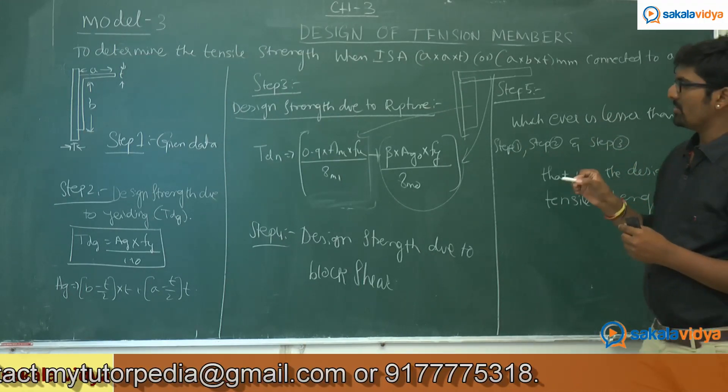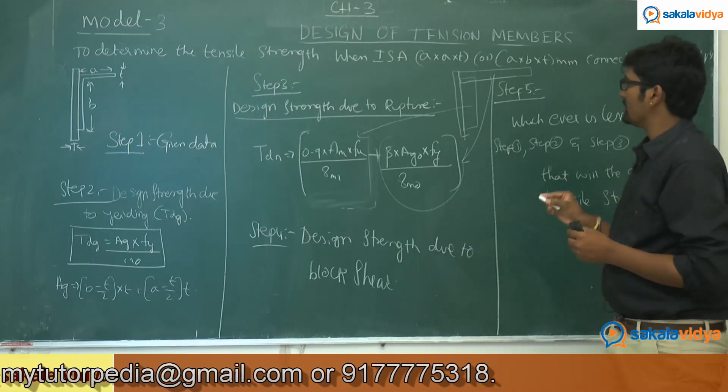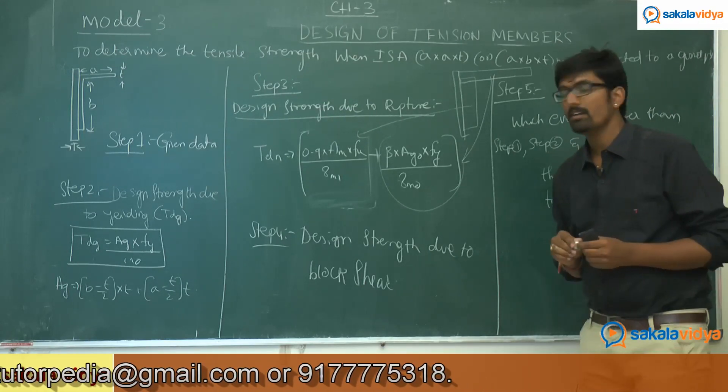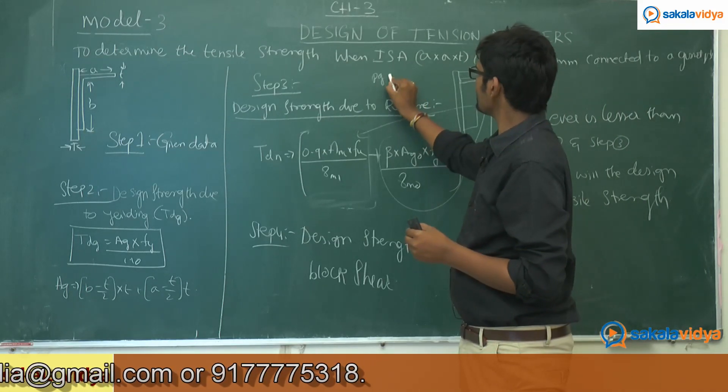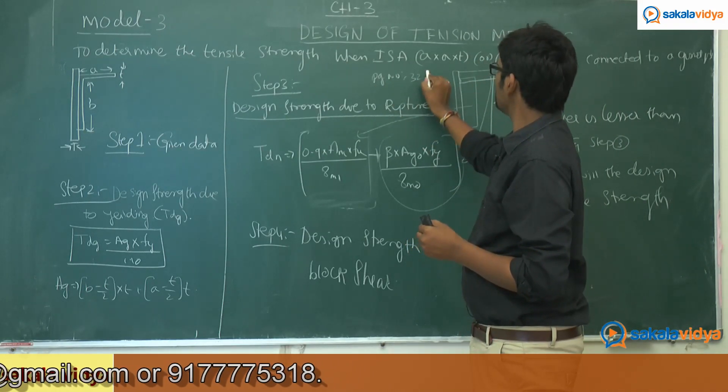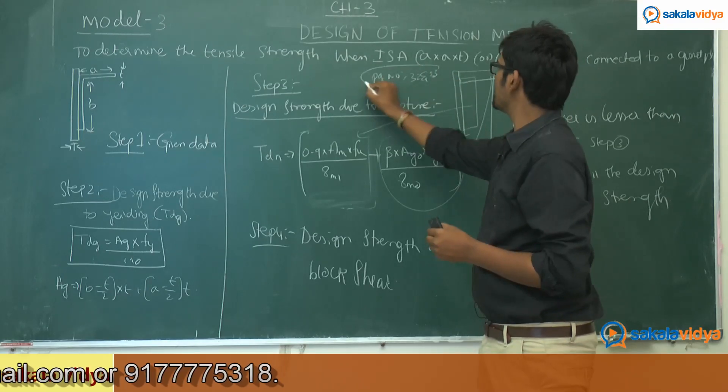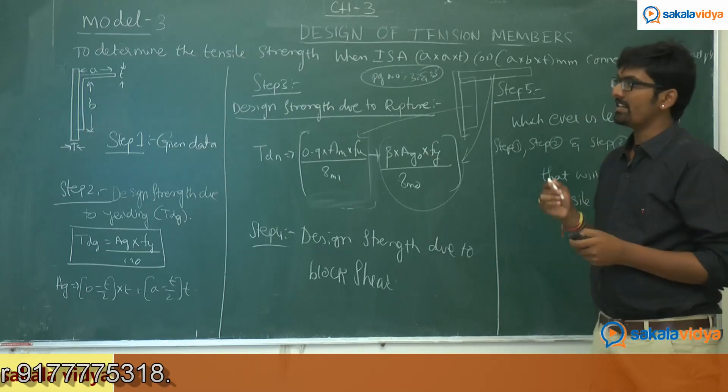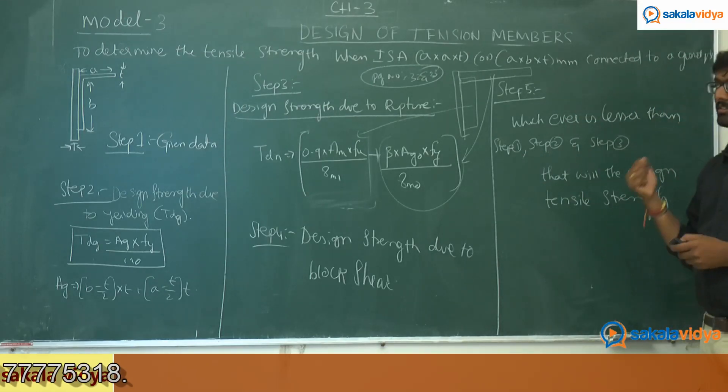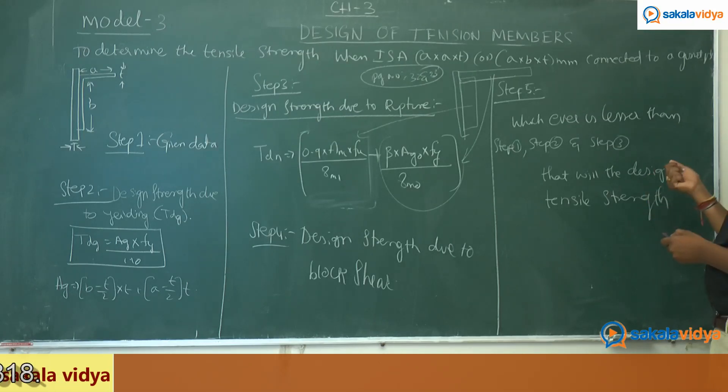In order to get these formulas, these formulas are already given in your steel table book IS 800, 2007, page number 32 and 33. So this page number 32 and 33 are very important in order to solve your tension members. So let us calculate some numerical problems on ISA, that is Indian Standard Angle Section, whether they are connected to gusset plate.